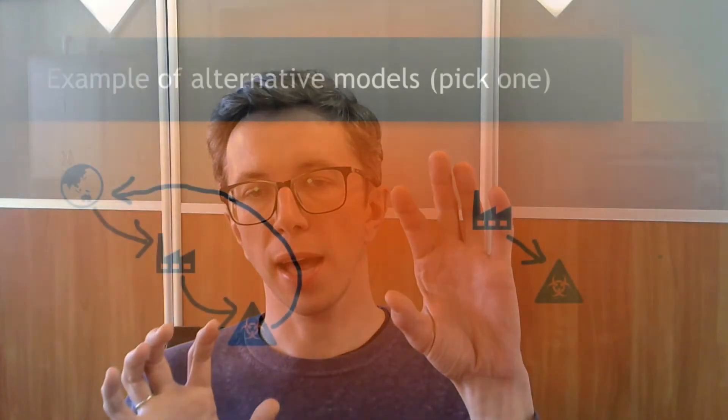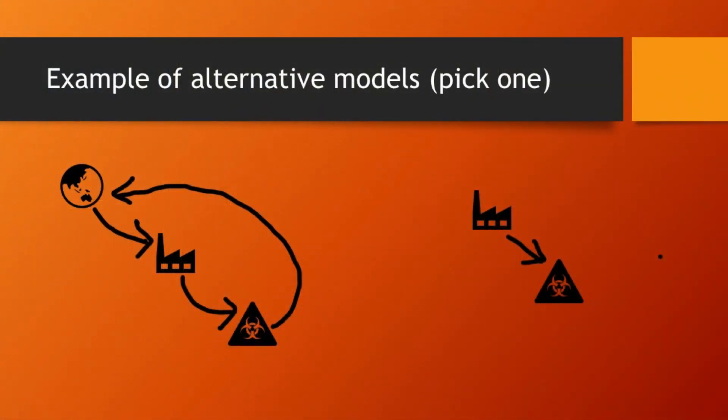If you think about the model, you could have two models here. A simple model: a factory produces pollution, and if it's bigger and more modern, it probably pollutes less. Fine. But in a more complex model, the factory is built somewhere in the world, and it draws various kinds of resources from its surroundings — that has an impact on the environment. And yes, maybe it pollutes less today, but because it's bigger and draws resources from a bigger area, the overall impact is probably bigger, even if today it pollutes less. Different models give you different conclusions — this is why your model is important.